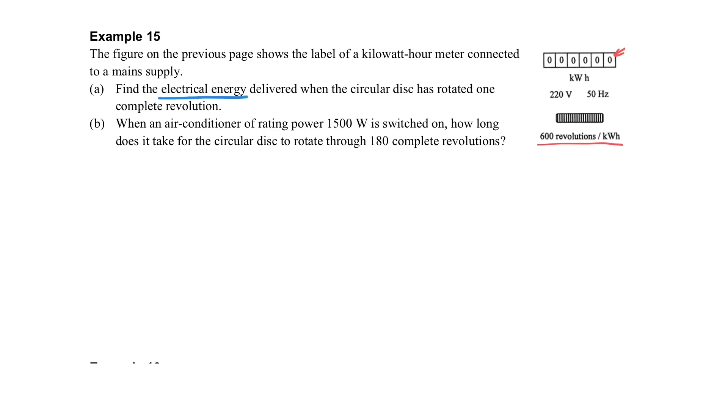In order to find the electrical energy delivered when the circular disk rotates one revolution: it states that when one kilowatt-hour of energy is passed through, it will have 600 revolutions. So in order to know one revolution, that means when it turns once how much energy is passed by, we just use one kilowatt-hour divided by 600.